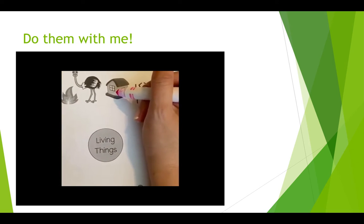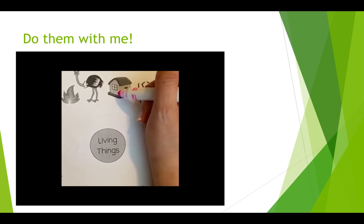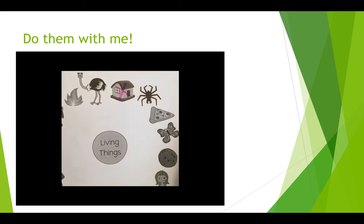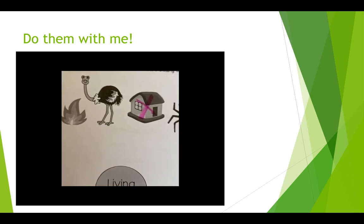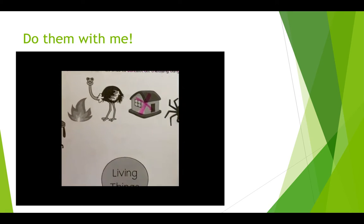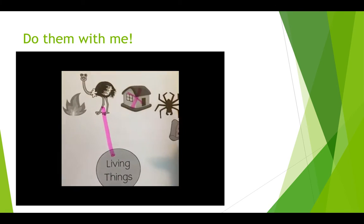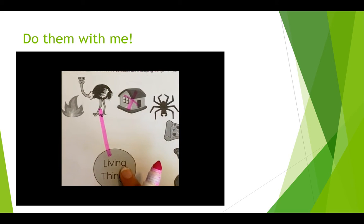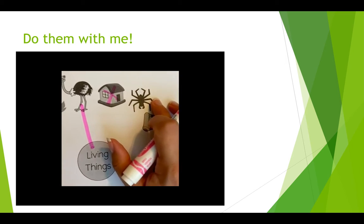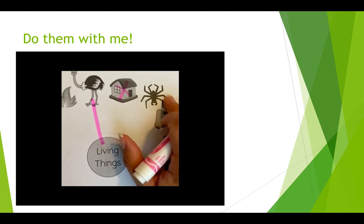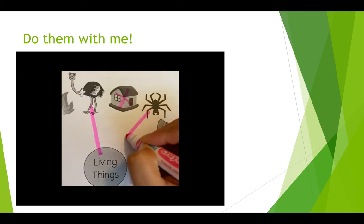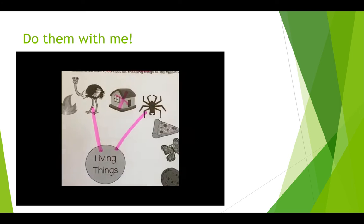Is this house something that eats, breathes, moves, grows, or reproduces? No. So I'm going to put an X. What about this ostrich? Does it eat, breathe, move, grow, and reproduce? Yes, that makes the ostrich a living thing. So we're going to make a line from the living thing circle to the ostrich. What about this spider? Does it eat, breathe, move, grow, and reproduce? Yes, the spider does because it makes more of itself. It breathes, it moves, and it grows.